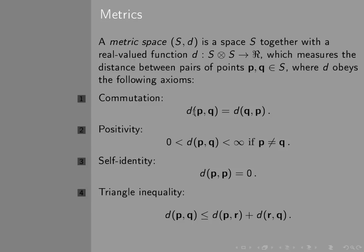So if you have two points P and Q in the set S, D obeys the following axioms. It's commutative. That is to say the distance from P to Q is the distance from Q to P. It's positive. The distance between P and Q is always greater than zero, and less than infinity, if P and Q are not identical. If they are identical, the distance is zero, and the triangle inequality must hold.